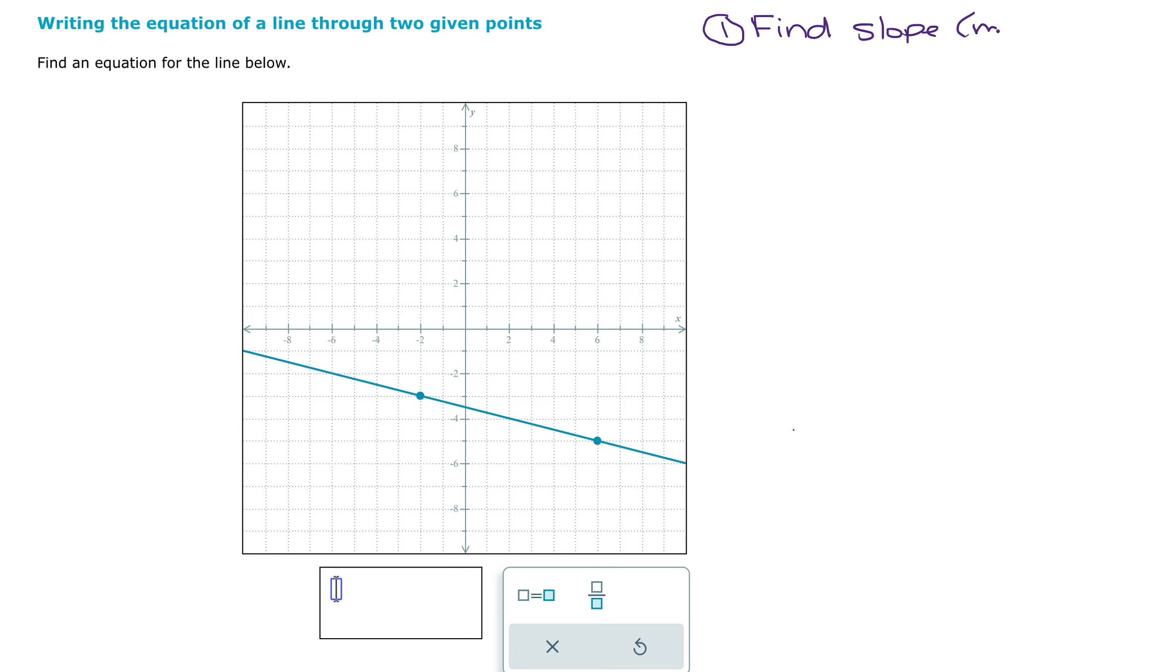One is that we could use the graph and count to find the rise over run. So going from the first point to the second point, I see that I'm going down two. And then to the right, one, two, three, four, five, six, seven, eight.